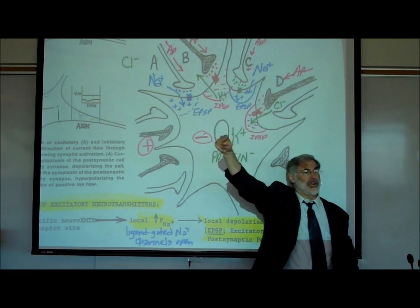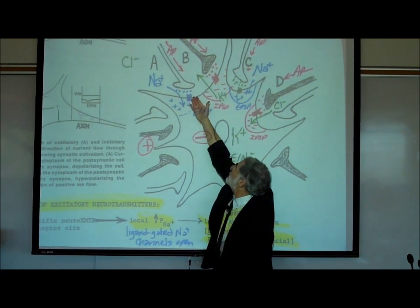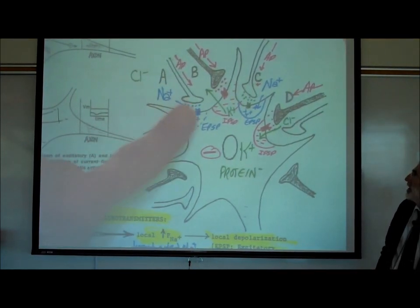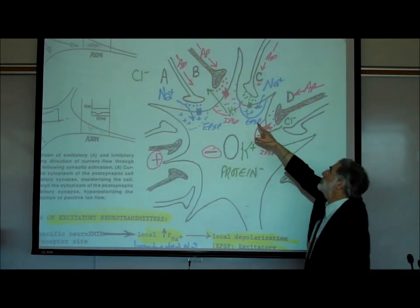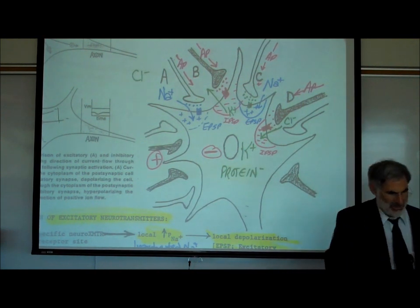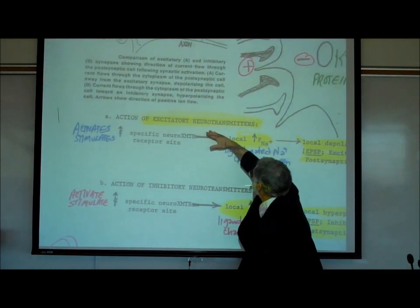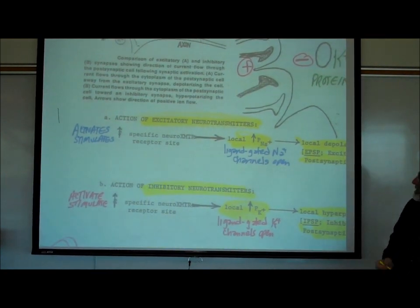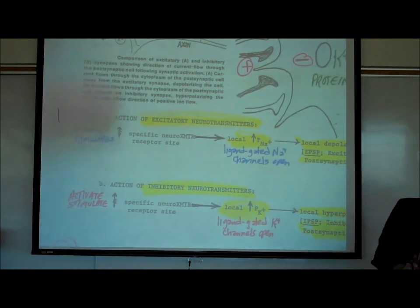Just like on the previous page, I showed some synaptic knobs clear and others shaded to represent that the clear ones are releasing an excitatory neurotransmitter and the shaded ones are releasing an inhibitory neurotransmitter. We want to understand the difference between excitatory and inhibitory neurotransmitters.